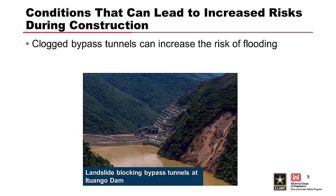If bypass tunnels are used to divert water during construction of a dam, there is a potential that tunnels could collapse or clog during construction, leaving the project with limited methods to pass inflows, which could then lead to overtopping. This is a photo of Ituango Dam, a new embankment dam that was under construction in Colombia, South America, where a landslide blocked the entrances to bypass tunnels, leaving no mechanism to control the pool. The main dam is off the photo, the tunnels were located here, and this entire hillside had instability issues.